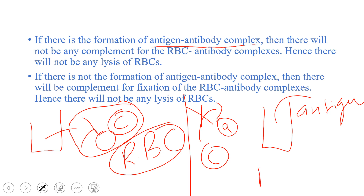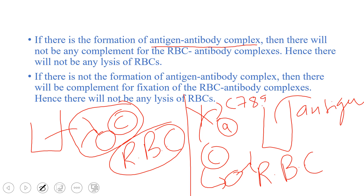Since there is no antigen-antibody complex, the free complement proteins will bind to the sensitized RBCs — the RBCs that have antibody attached. The complement proteins, specifically C789, are responsible for the membrane attack, so they will lyse the RBCs. Red coloration will be seen, and this means the test is negative. Unlike other tests, in the complement fixation test, color production indicates a negative result.